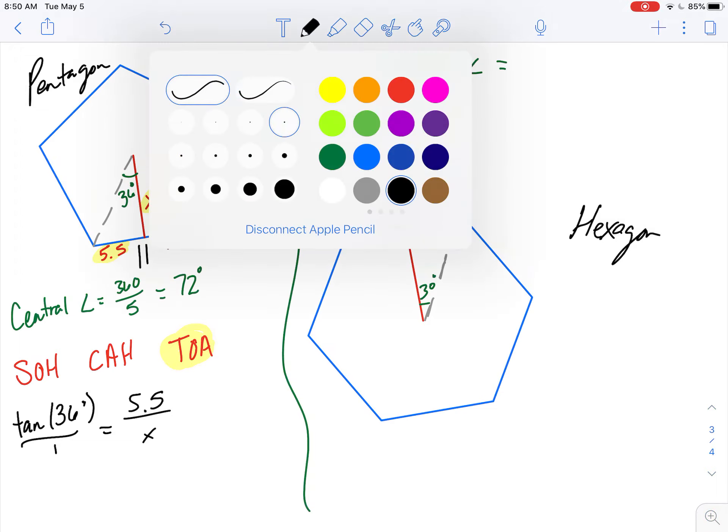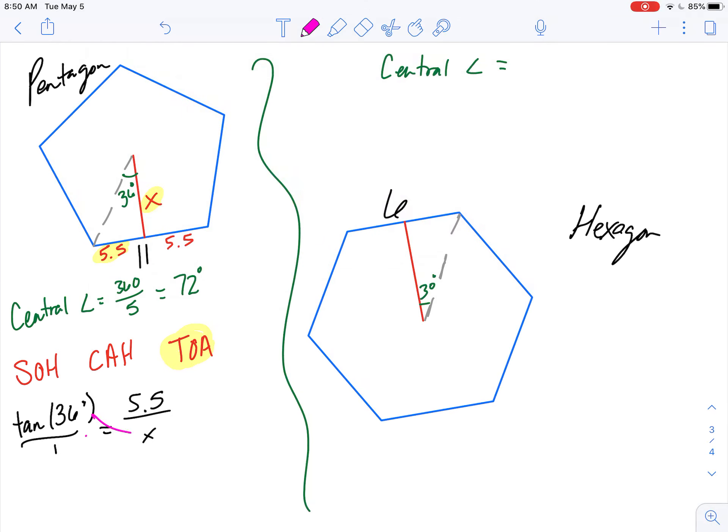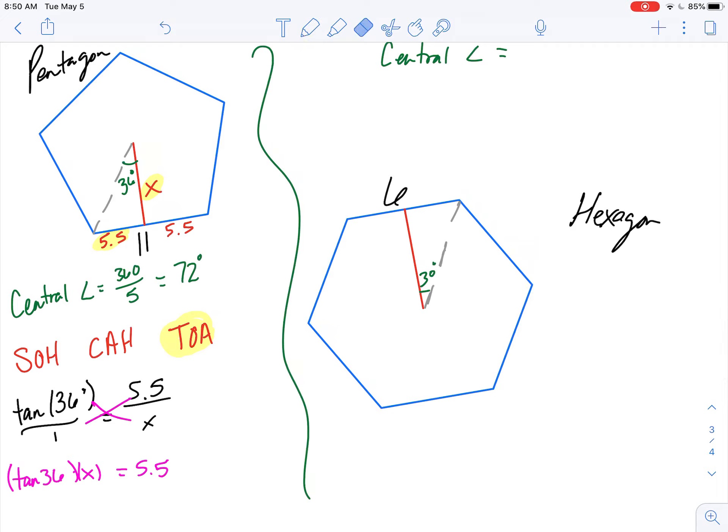And from here, what we can do is cross multiply, say tangent of 36 times x equals 5.5. And my last step, I want to solve for x.